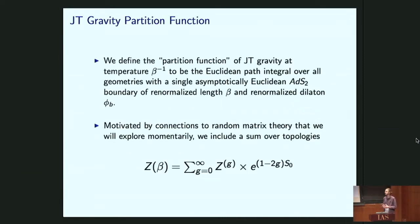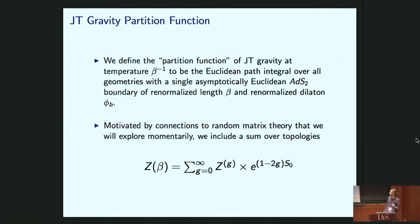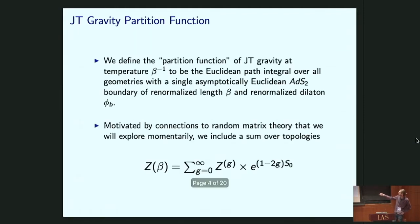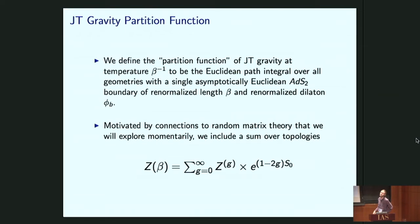We're going to define the partition function at inverse temperature beta as the Euclidean path integral over all geometries with one single asymptotically Euclidean AdS boundary with renormalized length beta and fixed dilaton value phi_b. Motivated by connections to random matrix theory, we include a sum over topologies. Because of the Euler characteristic term in the action, each topology is weighted by a factor of e^{-S0}, giving a sum with g=0 being the disk topology and g≥1 adding handles to the disk.